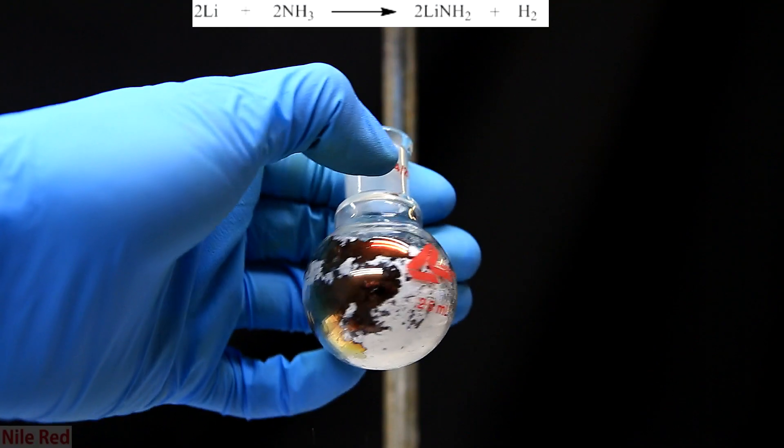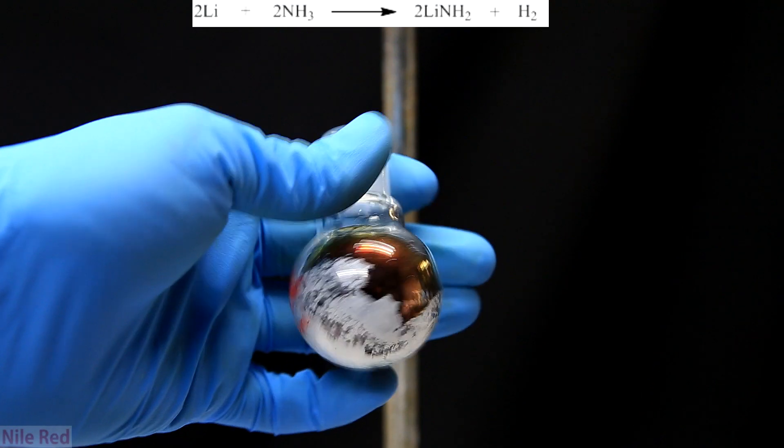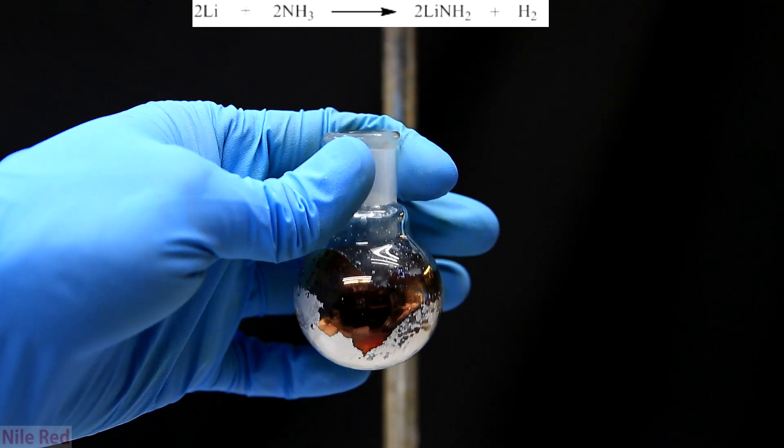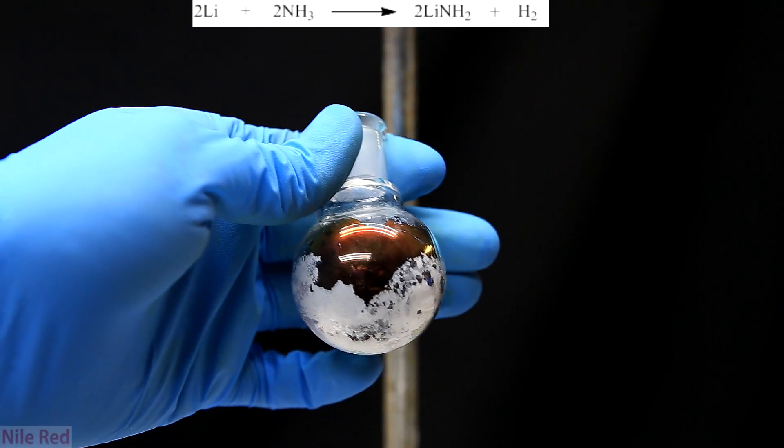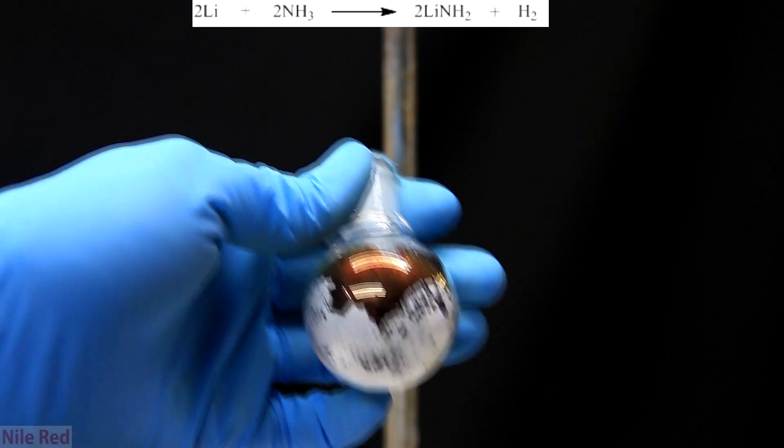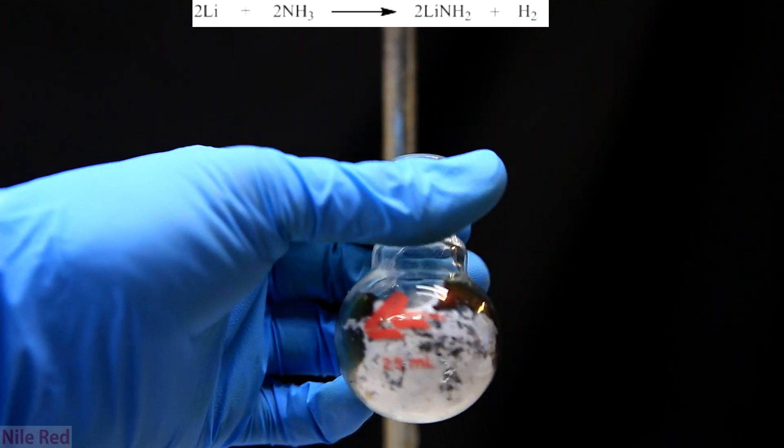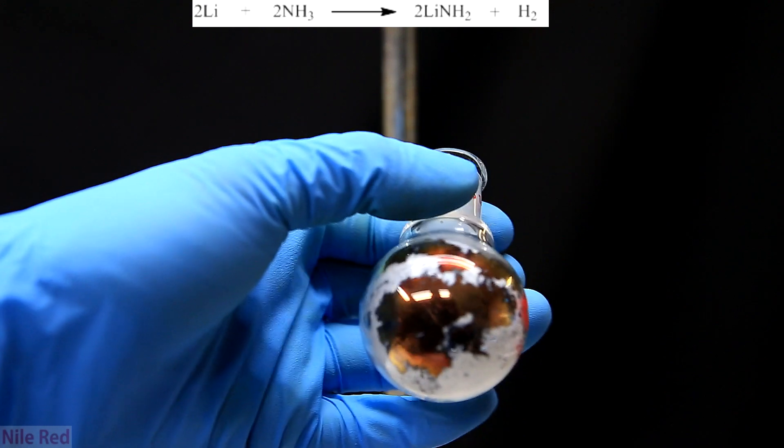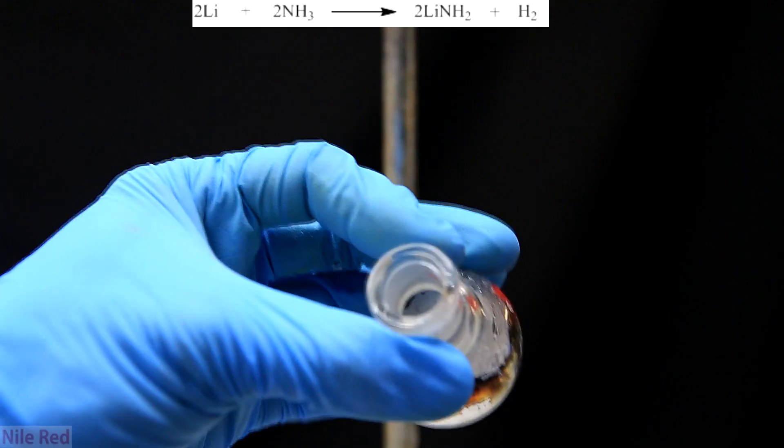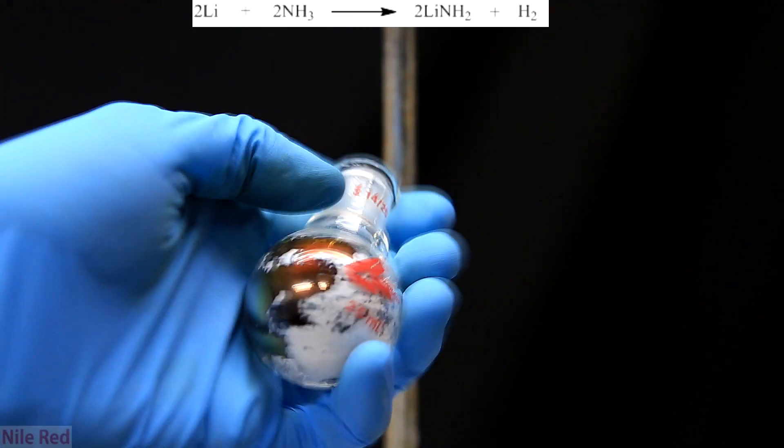Most of the white solid that you see is actually lithium amide. Unlike sodium, when lithium is added to ammonia, it very quickly forms the corresponding amide. When the ammonia evaporates, the salt will crystallize out. Some of the white powder is also formed when lithium reacts with CO2, water, and oxygen in the air.